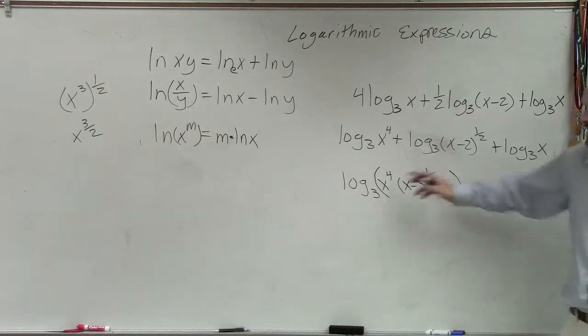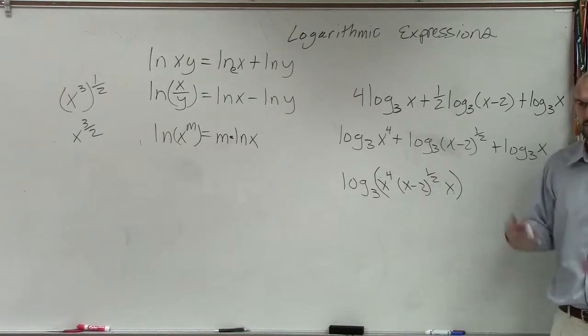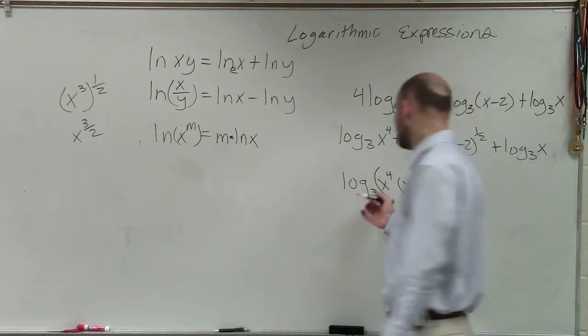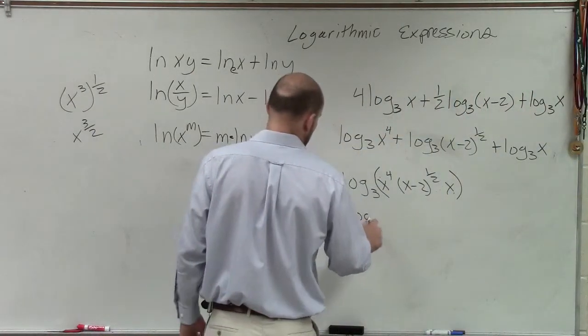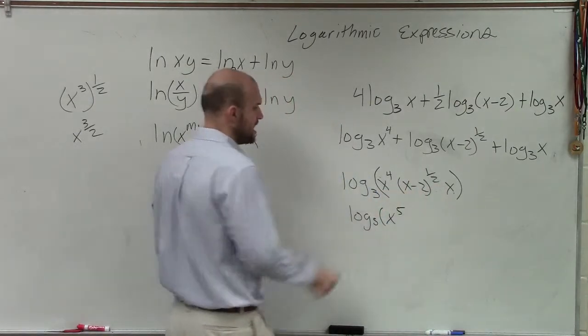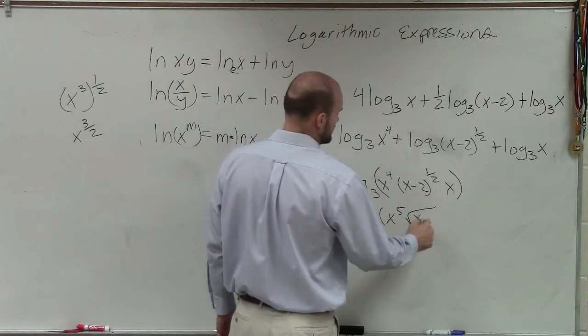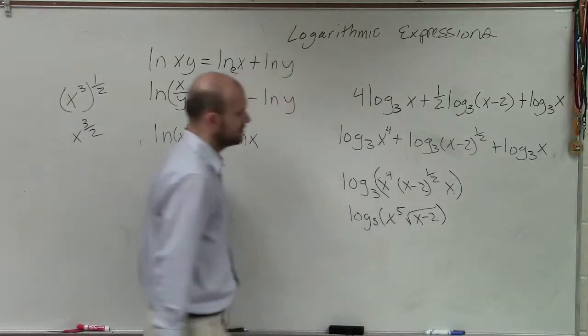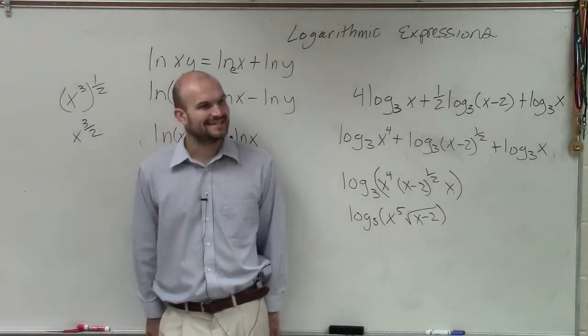So anyways, I can multiply x times x to the fourth, right? So let's simplify that to x to the fifth. And then x minus 2 to the 1 half, we can rewrite as the square root of x minus 2. Done and done.